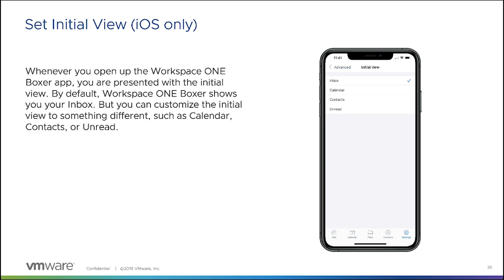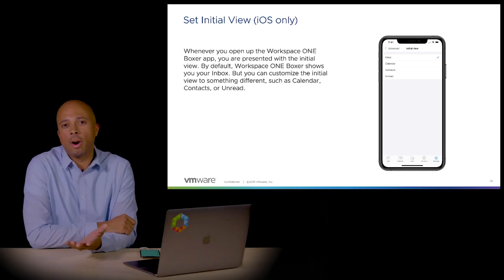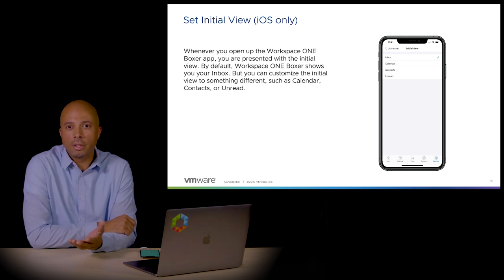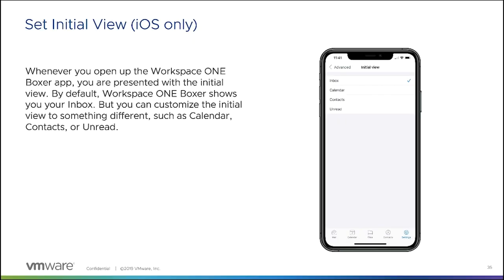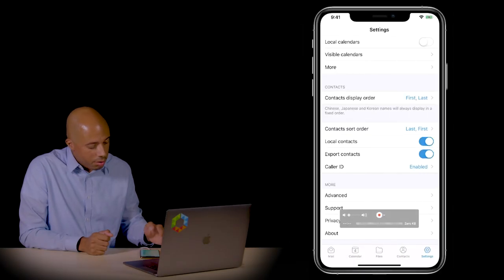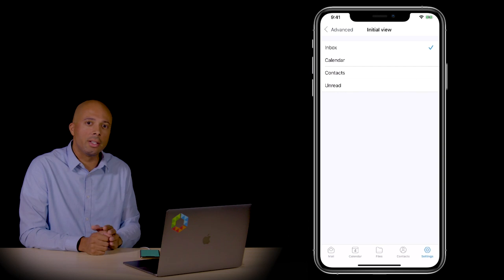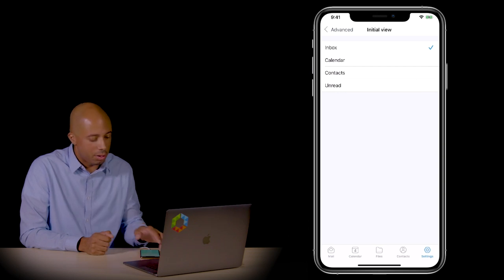Set the Initial View is for iOS only. This allows you to define a default start page in the Boxer application. For example, if you routinely check your calendar events a lot and want to start there every morning, you can set that as your default page — it doesn't have to take you to email or contacts first. On the device, go to settings, then under Advanced and then Initial View, instead of initially showing your inbox, you can have it show the calendar.